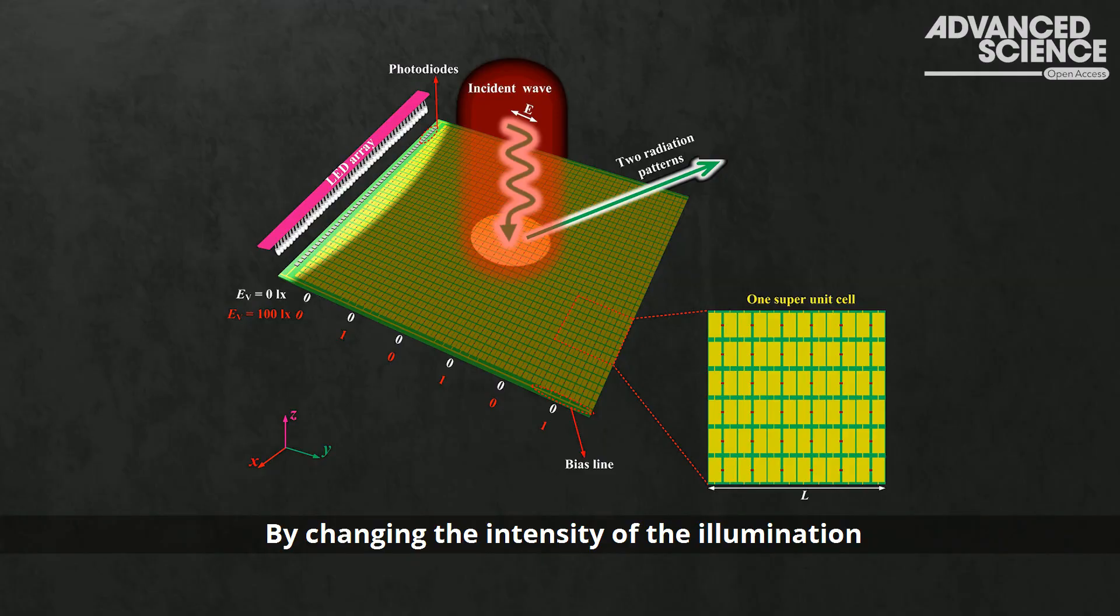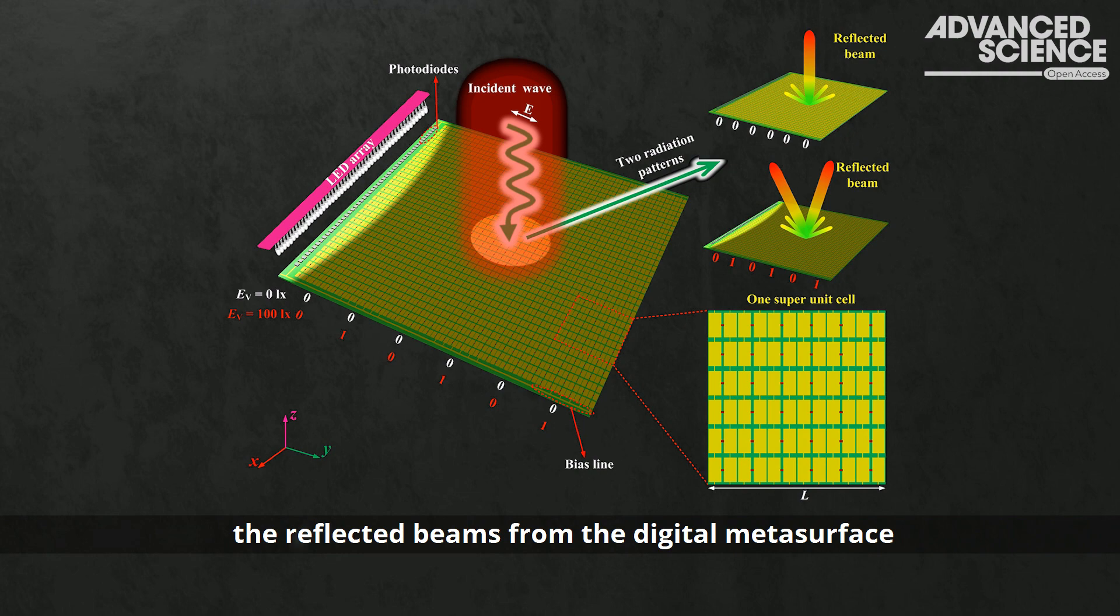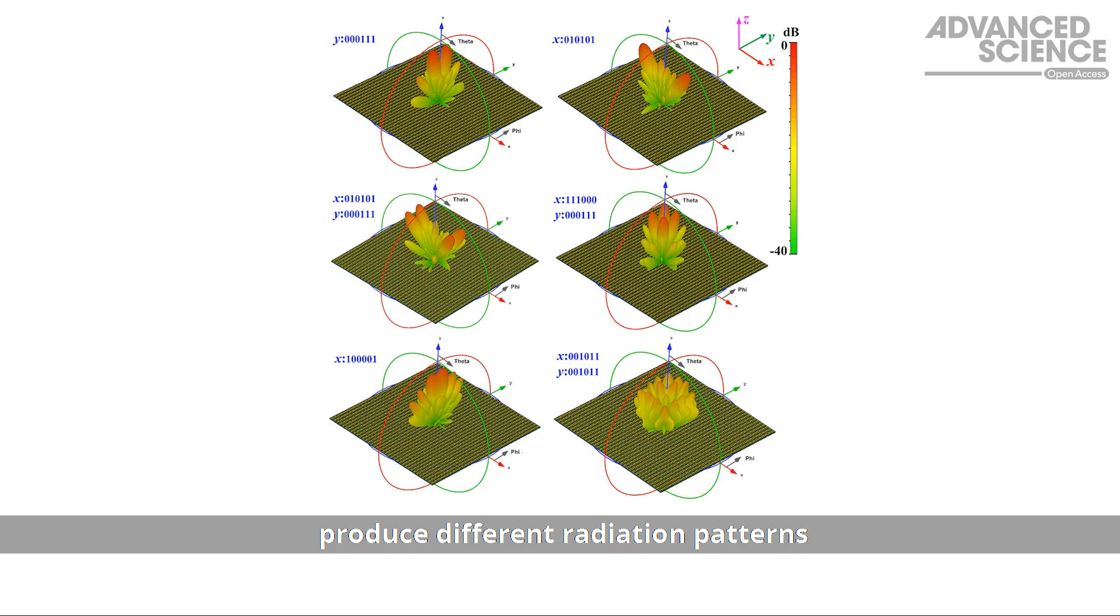By changing the intensity of the illumination onto the photodiode array, the reflected beams from the digital metasurface produced different radiation patterns, corresponding to different digital coding sequences.